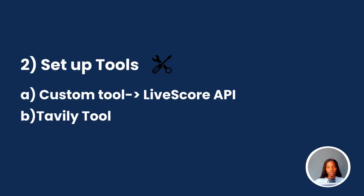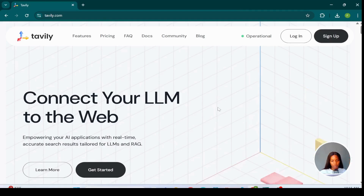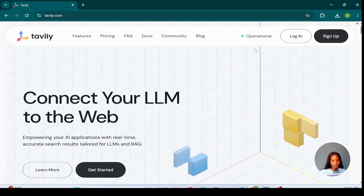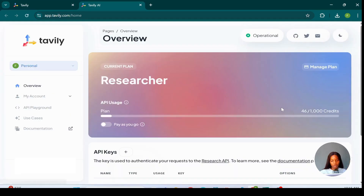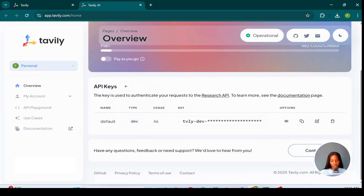The next thing is to set up the tools. We're going to get the API key for Tavily, and then the API for the custom tool we want to use, which is the LifeScore API. Go to the Tavily official website, click on Login, go down to the API key section, and copy your key.